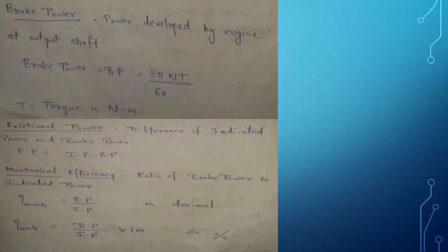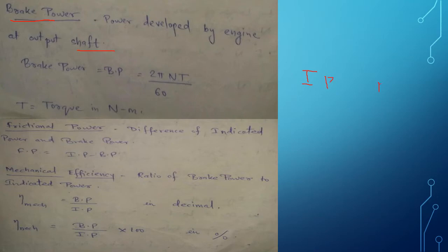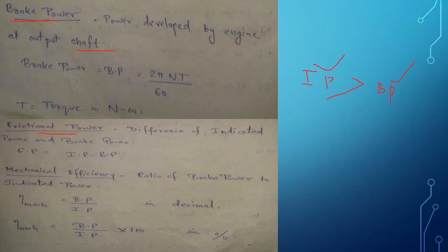The second term is brake power. Brake power is the power developed by the engine at the output shaft. If we compare indicated power and brake power, brake power will be less than indicated power, meaning there are some losses in power while the engine develops it. Indicated power is always greater than brake power.